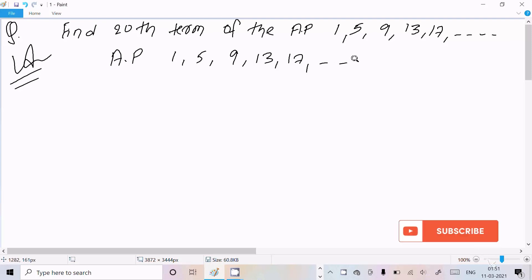So here we already know the nth term of AP, that is Tn equals a plus n minus 1 into d. So here a is the first term, d is the difference between two terms, and n is the nth term. So we need to calculate Tn.